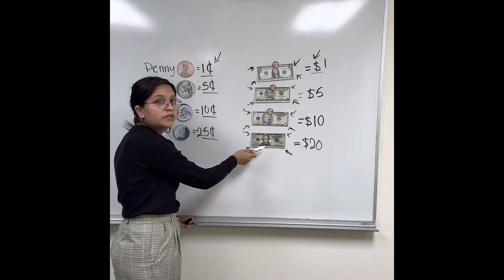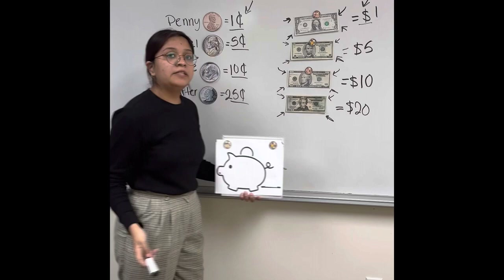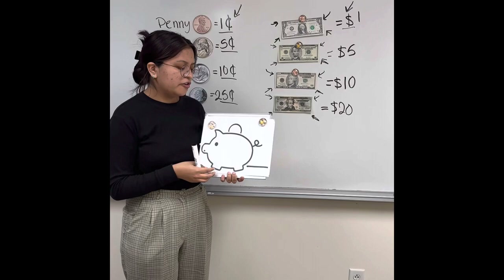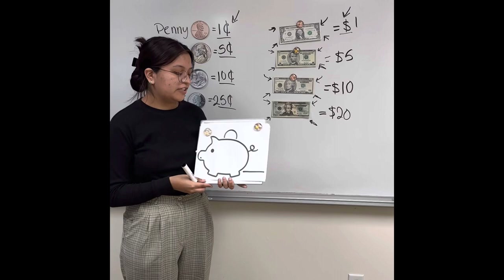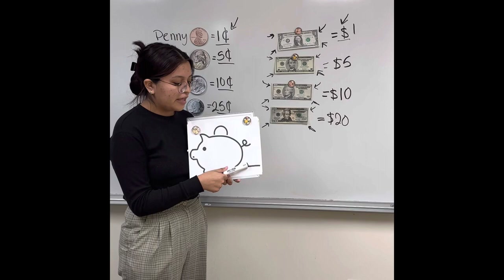Based on what we learned today about coins and bills, we'll be doing an activity. Does anyone know what this is right here? A piggy bank. Good job. And do you know what we put in piggy banks? Money. Great job. So for this activity, we're going to put a value down, an amount, and then put little dollars or coins depending on what the value is.